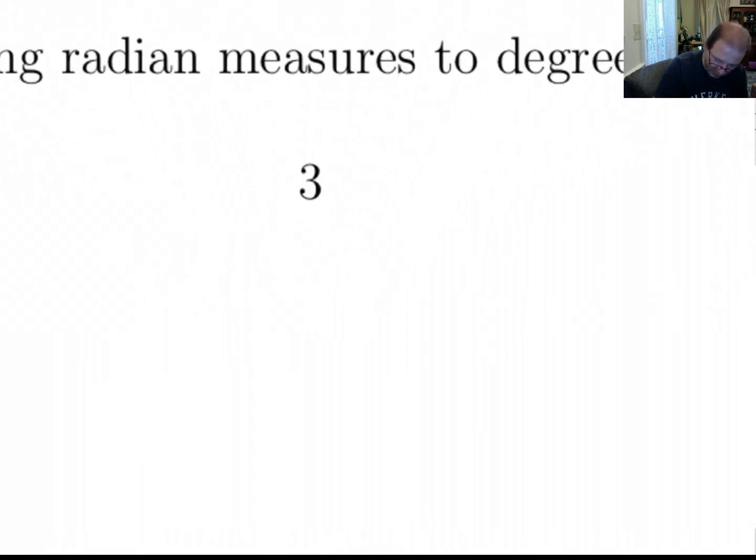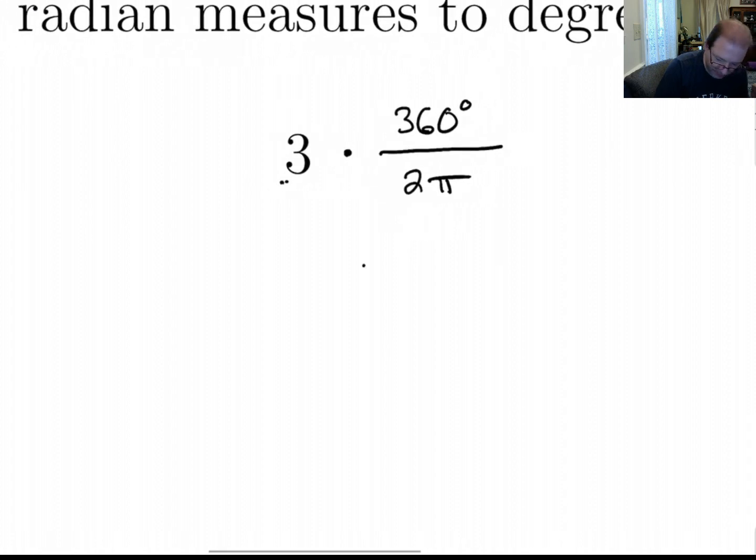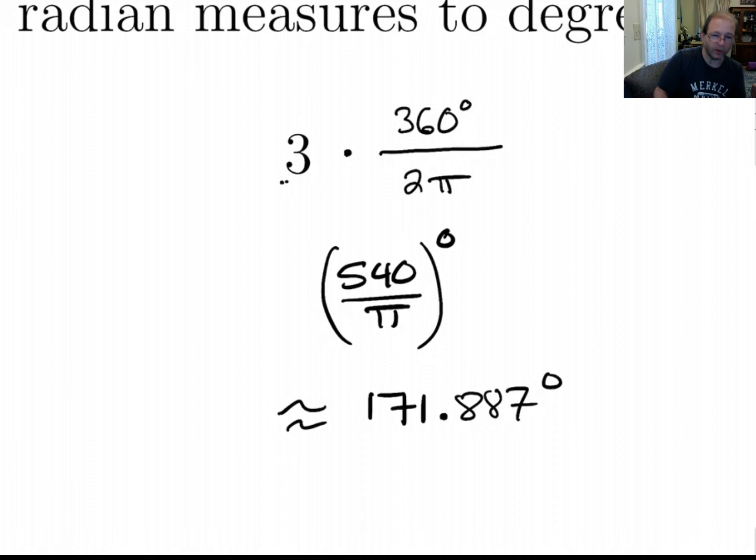Okay, 3. Well, that's weird just to see a 3 there, but there's no problem. You just take this and you multiply 3 times 360 degrees over 2π radians. So 3 times 360 divided by 2. So you can either leave this as 540/π degrees, or you could just do 3 times 360 over 2 divided by π. Or you could convert this to 171.887 degrees. I'm going to put a squiggly equal in front because that's an approximation.